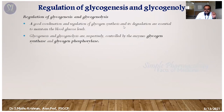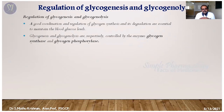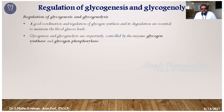Glycogen synthesis and degradation directly maintain blood glucose levels. When blood glucose is high, excess glucose is converted into glycogen, reducing blood glucose. When blood glucose is low — hypoglycemic condition — glycogen breaks down to produce glucose and restore sufficient blood glucose levels. These two pathways control blood glucose balance.